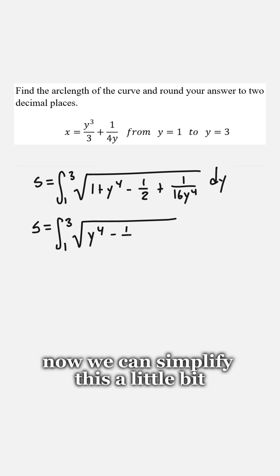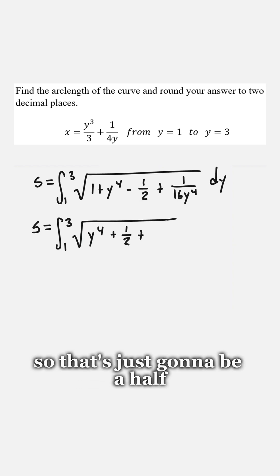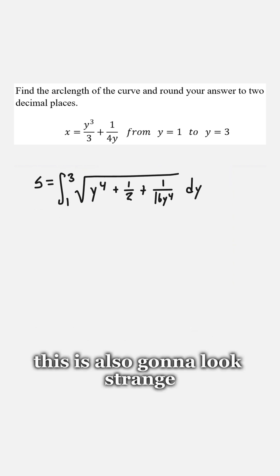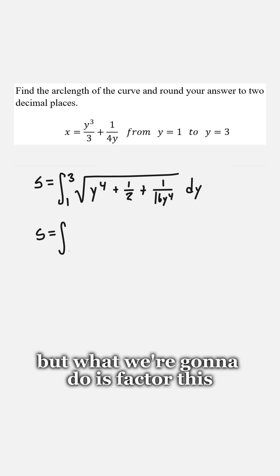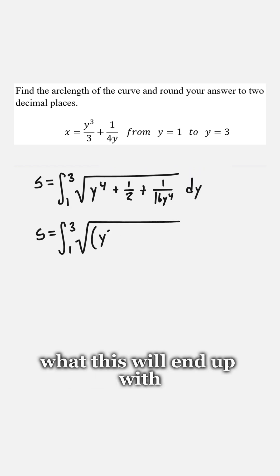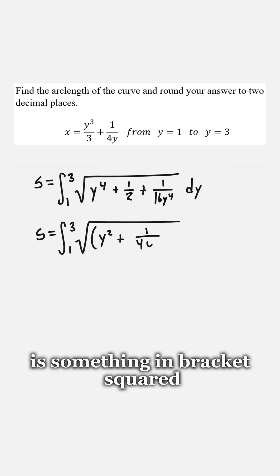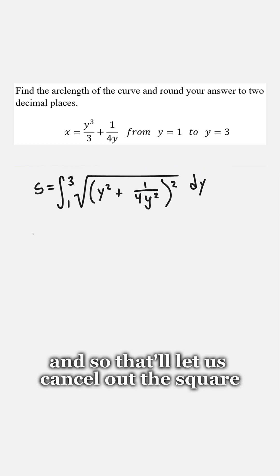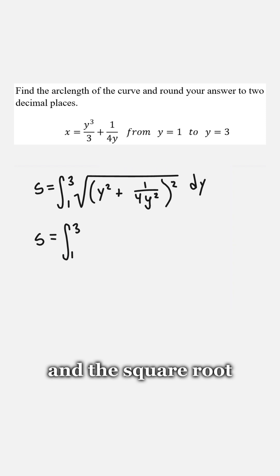Now we can simplify this a little bit, we have 1 minus a half, so that's just going to be a half. And then when we get to this part, this is also going to look strange, but what we're going to do is factor this. So, if we go ahead and factor this, what this will end up with is something in brackets squared and then all square rooted. And so that'll let us cancel out the square and the square root.